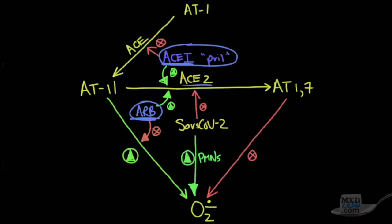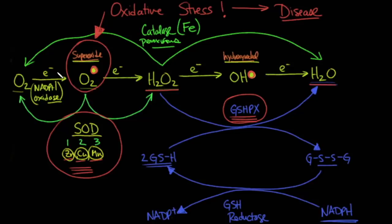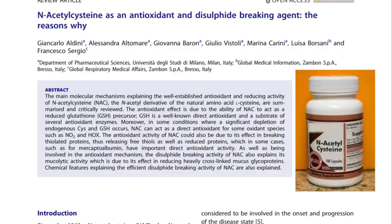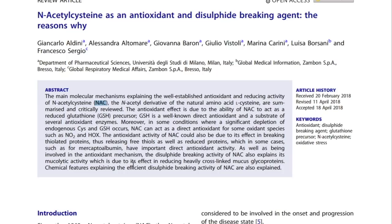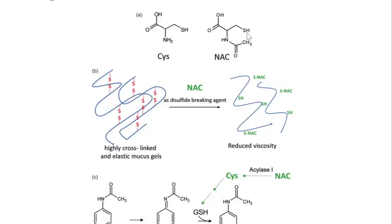If COVID-19 gives us an excess of superoxide and hydroxy radicals, and that excess can be taken care of through glutathione peroxidase, are there things we can do to help glutathione peroxidase remain in the reduced form to alleviate oxidative stress? The answer is potentially yes. Enter N-acetylcysteine, otherwise known as NAC. N-acetylcysteine is both an antioxidant and a disulfide breaking agent. NAC has a sulfur bound to a hydrogen, meaning it's a reducing agent, and it looks very similar to cysteine — it's an amino acid except it has an acetyl group bound to the nitrogen. That's why it's known as N-acetylcysteine.